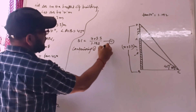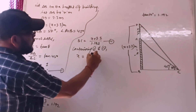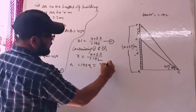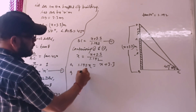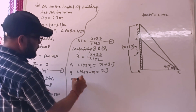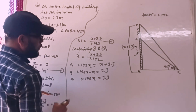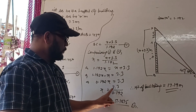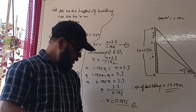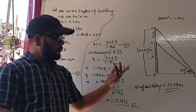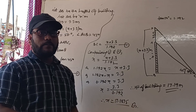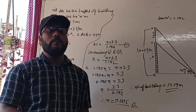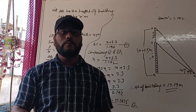Comparing equation 1 and 2: x = (x + 3.3) / 1.192. Therefore 1.192x = x + 3.3, so 0.192x = 3.3, giving x = 3.3 / 0.192 = 17.1875 meters. So the height of the building is approximately 17.19 meters.